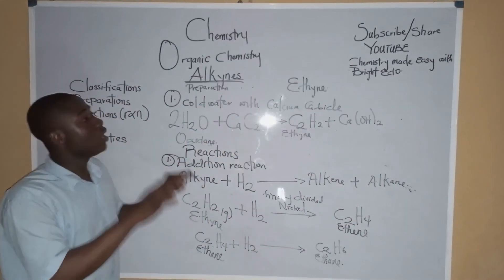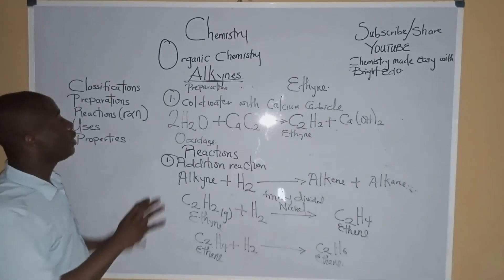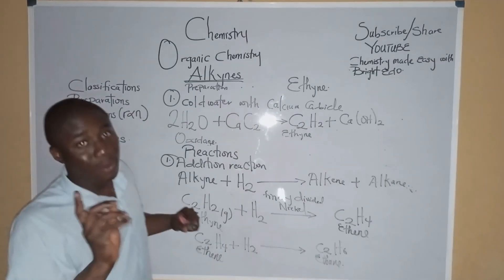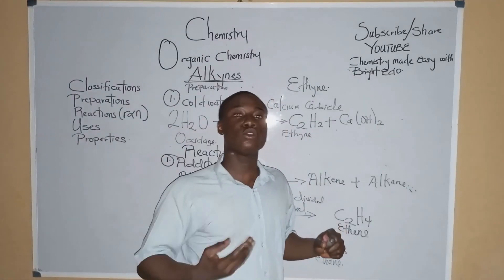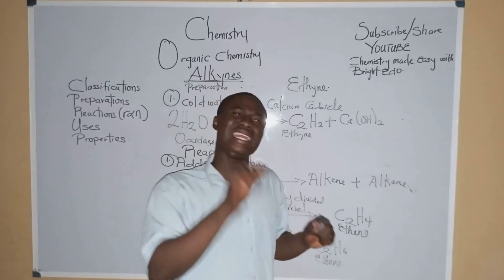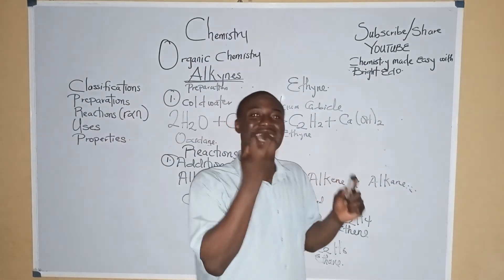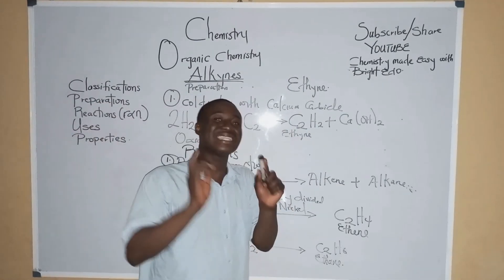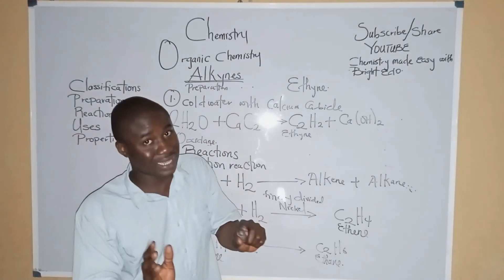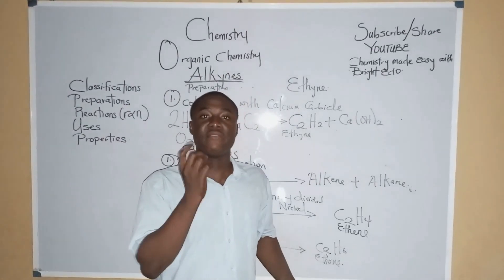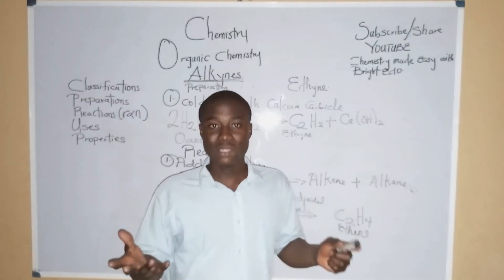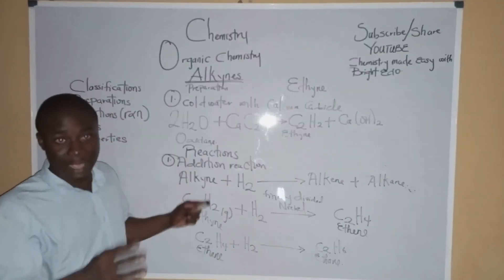These are some uses of acetylene, the first member of alkynes. Now let's talk about the properties. Alkynes are colorless and odorless, but acetylene specifically has a garlic smell. Alkynes are generally slightly soluble in water but very soluble in acetone. I believe we now understand the concepts about alkyne chemistry.